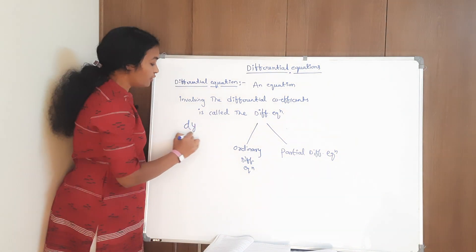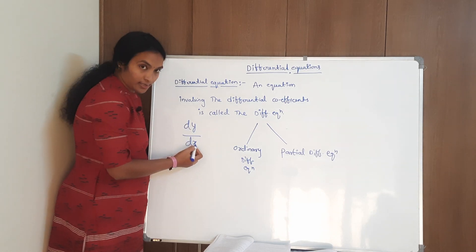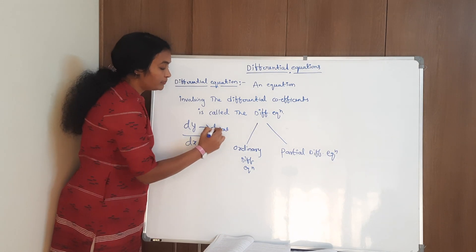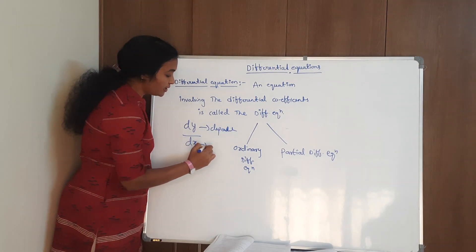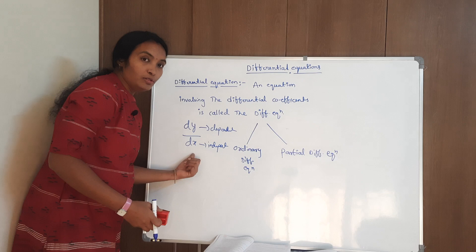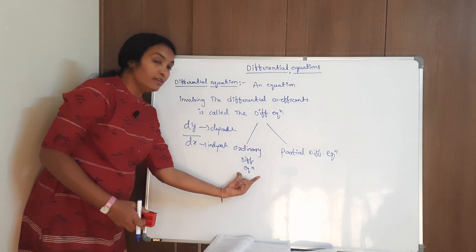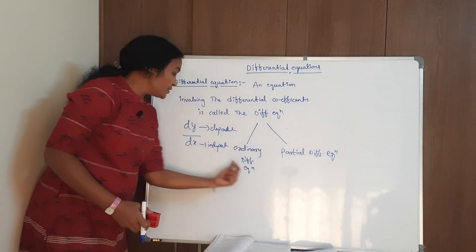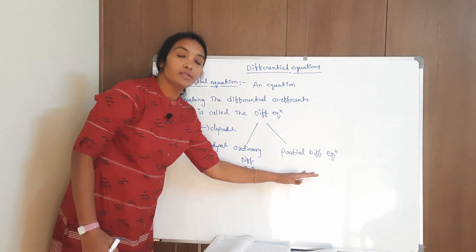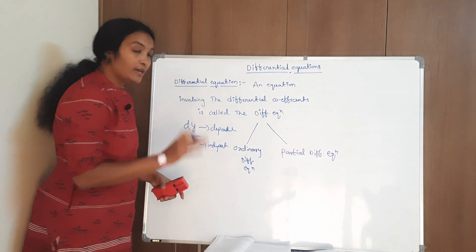What is a dependent variable and what is an independent variable? When we differentiate y with respect to x, y is the dependent variable and x is the independent variable. Based on these two values, we are going to discuss the two types. An ordinary differential equation has only one independent variable.